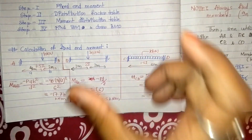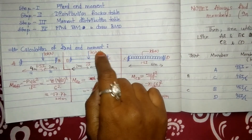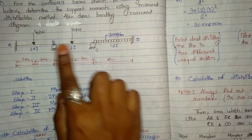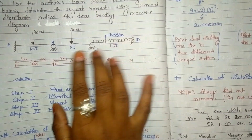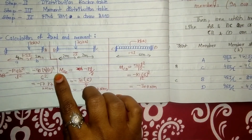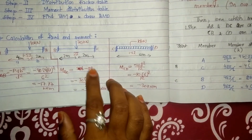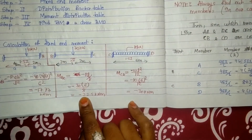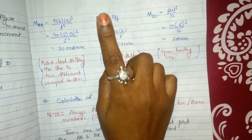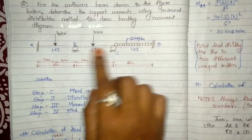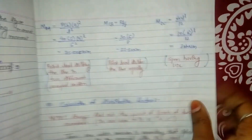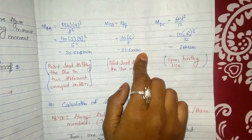For fixed end moment when point load divides the line equally — here 30 kN is dividing the line into 3 m and 3 m equal sections. Whenever we are going from left to right, the moment is always negative. So Mbc = −22.5 kN·m using formula PL/8. For Mcb, the same formula is used but positive because now we are moving from right to left, giving Mcb = +22.5 kN·m.